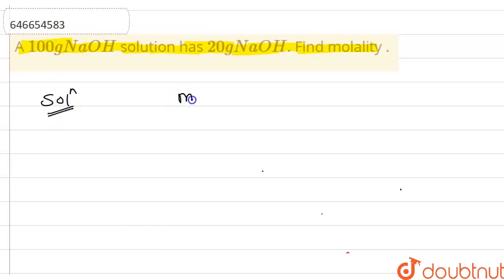So required number of moles is equal to mass of solvent, that is 100 gram, upon molar mass of NaOH, that is 40, divided by molar mass of solvent, that is 20.